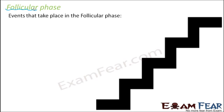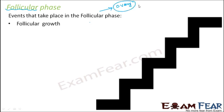The events that take place in the follicular phase include follicular growth — the growth of follicles inside the ovary. To remind you, the follicles are always inside the ovary: primary follicle, then secondary, then tertiary, then the Graafian follicle. The Graafian follicle then ruptures to release the egg, which is how ovulation occurs. After menstruation, follicular growth takes place again.